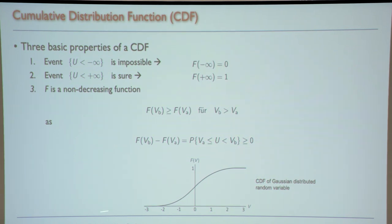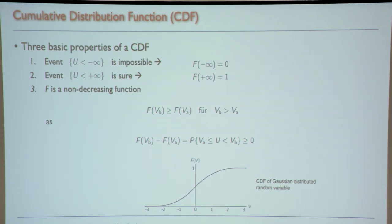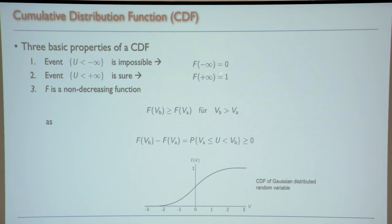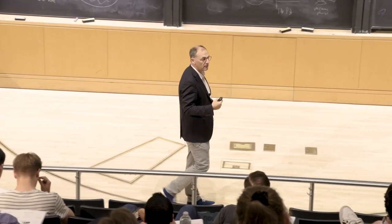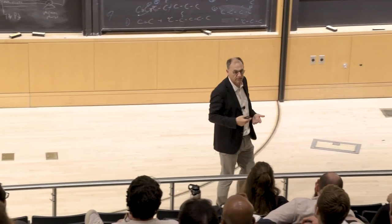This is shown on the plot: the probability that velocity is less than a given value goes from zero at minus infinity to one at plus infinity. F(−∞) = 0 because no velocity can be less than minus infinity; F(+∞) = 1 because every velocity is less than plus infinity. The CDF is a non-decreasing function — the probability of being less than 10 cannot be less than the probability of being less than 5.